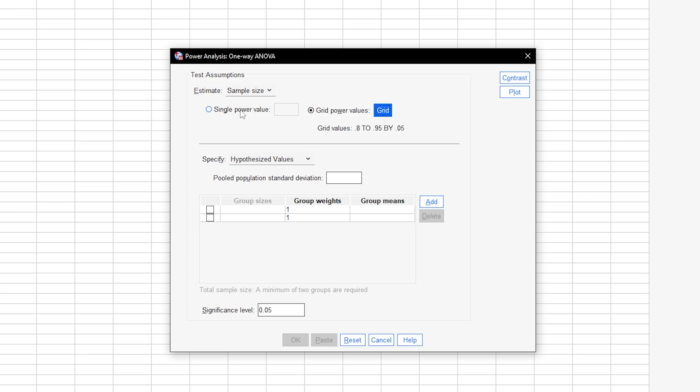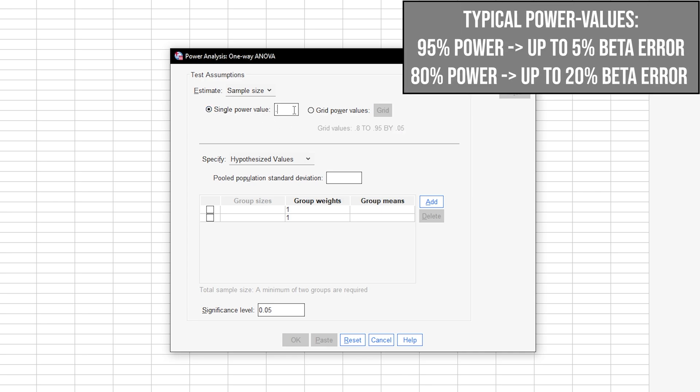I will use single power value of 0.95 and therefore have a 5% type 2 error probability. In some research fields, 0.8 is used here. This means you automatically accept a type 2 error of up to 20%. If you have power lower than 0.95, this usually calls for a reasonable justification.